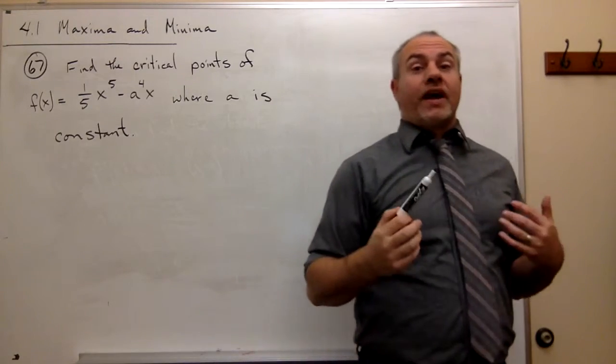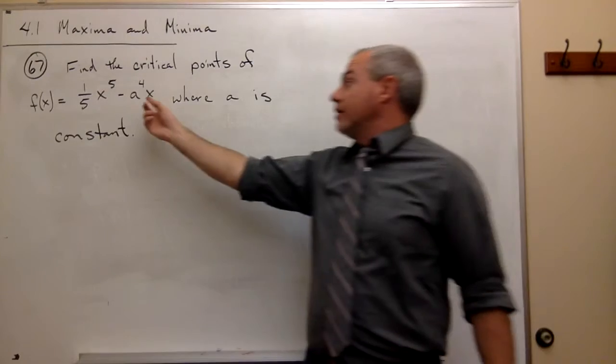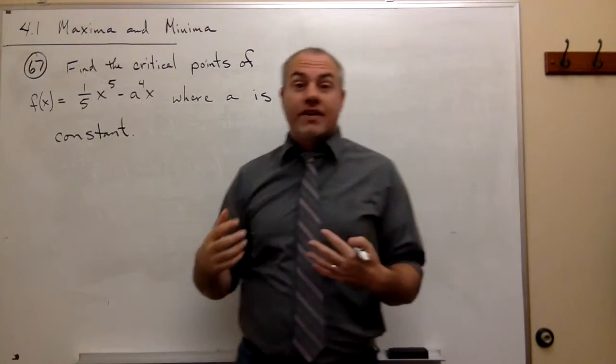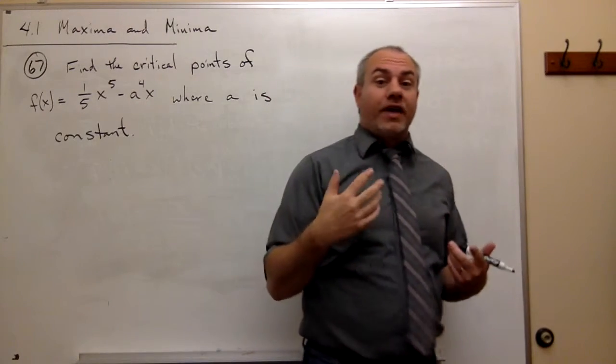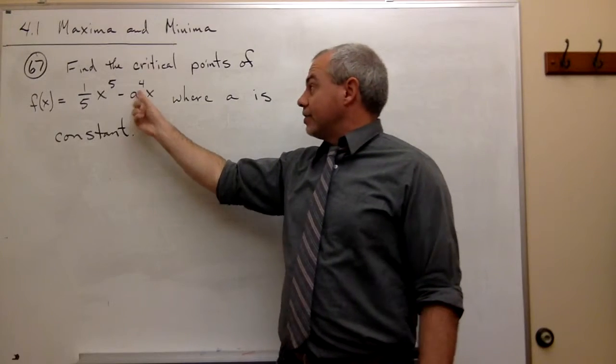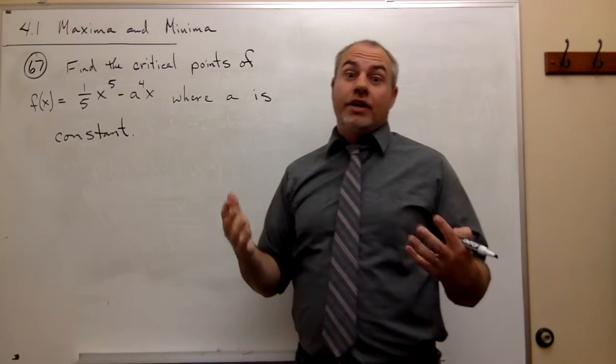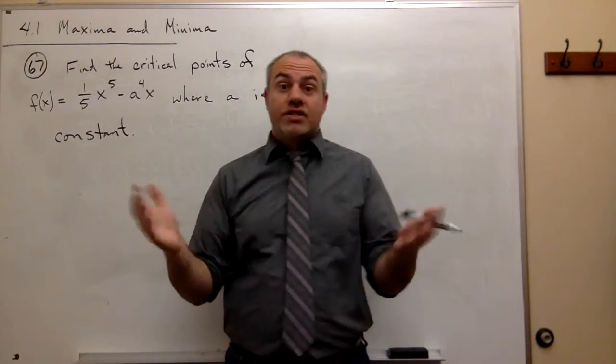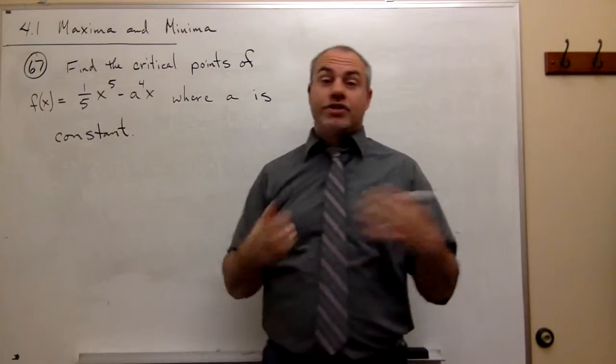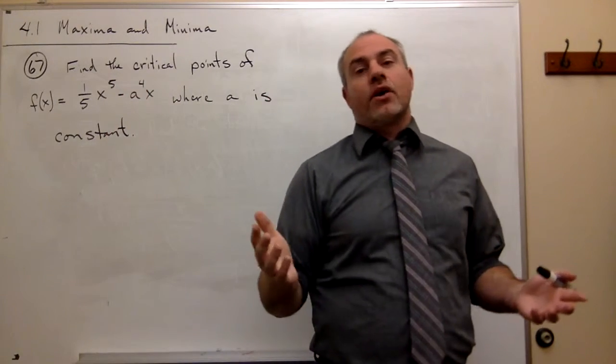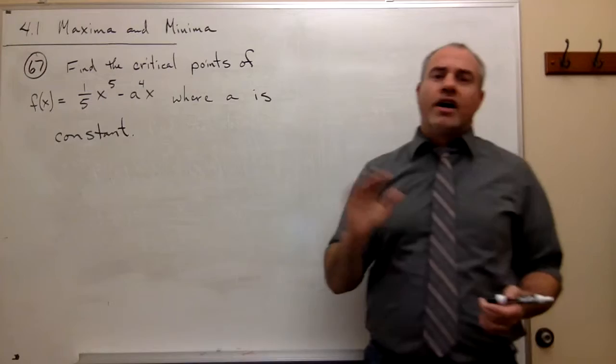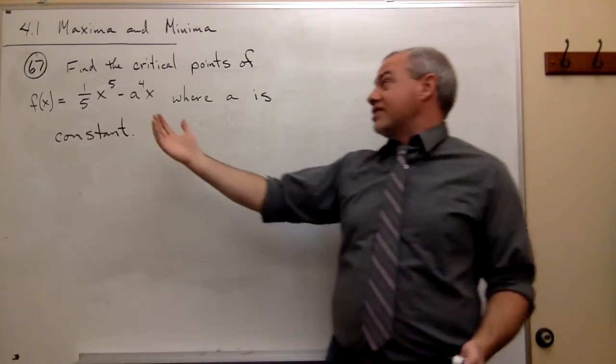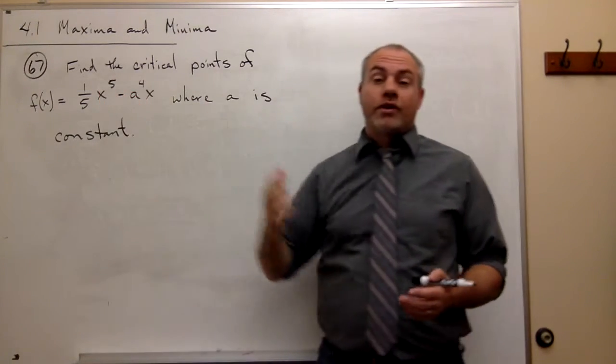So another problem where we have this constant a, and we're just going to treat it as if it were a 3. If that were 3 to the 4th, well 3 to the 4th is a constant, so it's just some number. a to the 4th is just some number, and that's all we really care about. It's just a number, a to the 4th.